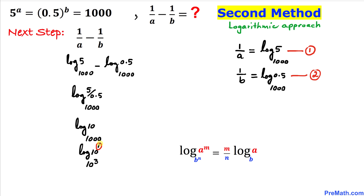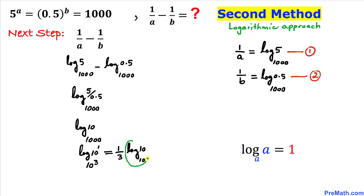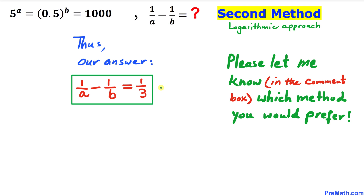Now we rewrite: 10 as 10 to the power 1 and the base 1000 as 10 to the power 3. Using the log power property, this becomes 1 over 3 times log base 10 of 10. Since the argument and base are the same, log base 10 of 10 equals 1. Therefore the result is 1 over 3 times 1, which equals 1 over 3. The value of 1 over a minus 1 over b turns out to be 1 over 3. Thanks for watching and please don't forget to subscribe.